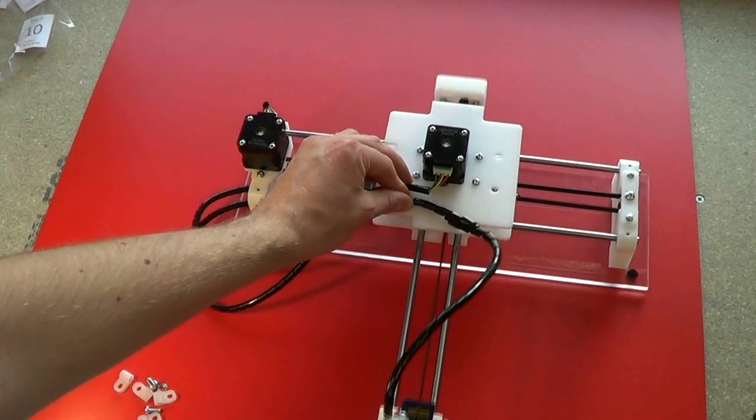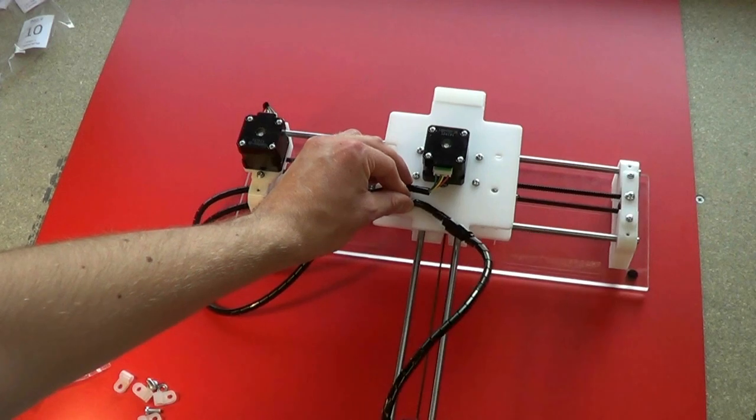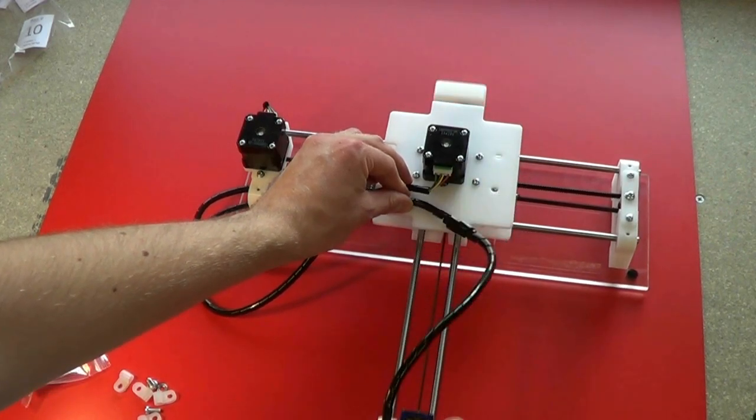While holding them, just move the Y-axis backwards and forwards and check that the servo cable flexes freely and doesn't snag on anything.